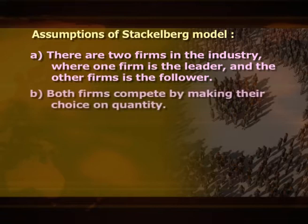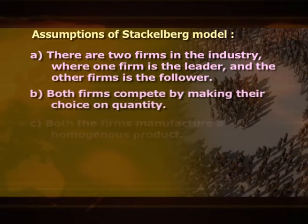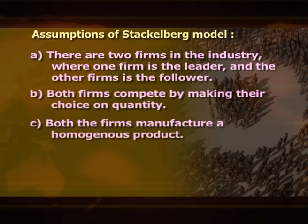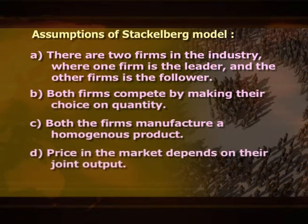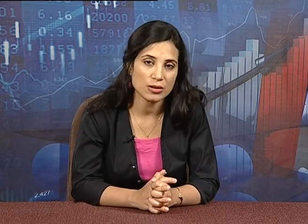The assumptions of the Stackelberg model are: first, there are two firms in the industry where one firm is the leader and the other is the follower; second, both firms compete by making their choice of quantity; third, both firms manufacture a homogeneous product; fourth, price in the market depends on joint output. The Stackelberg model is a sequential game, not simultaneous as in the Cournot model. Stackelberg equilibrium is explained with the use of reaction curves shown in the figure.